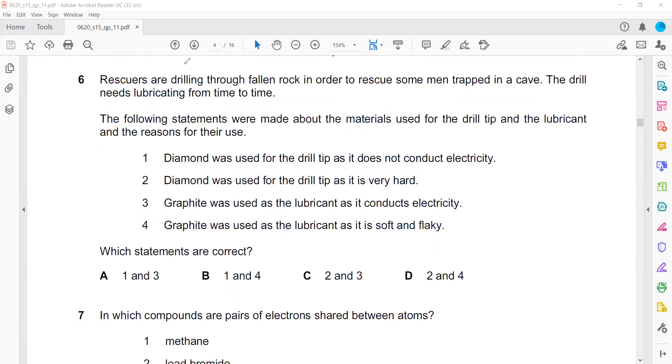Rescuers are drilling through a fallen rock to rescue men trapped in a cave. The drill needs lubricating from time to time to reduce friction. The following statements were made about the materials used in the drill tip and lubricant. Diamond is used for the drill tip because it is hard. Graphite is used as lubricant because it is soft and flaky, so it reduces friction. Statements two and four are the right statements.